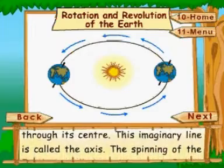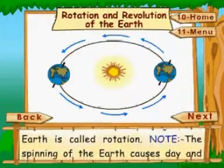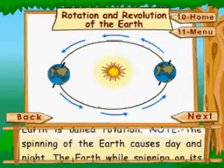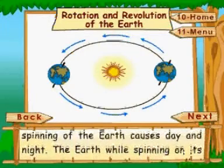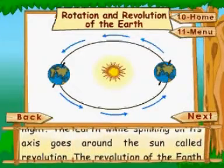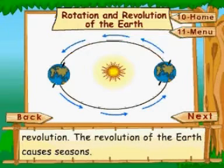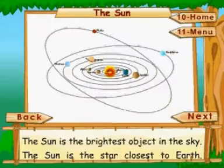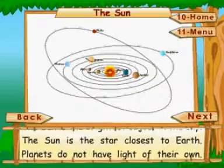This imaginary line is called the axis. The spinning of the earth is called rotation. The Sun is the brightest object in the sky and is the star closest to earth.